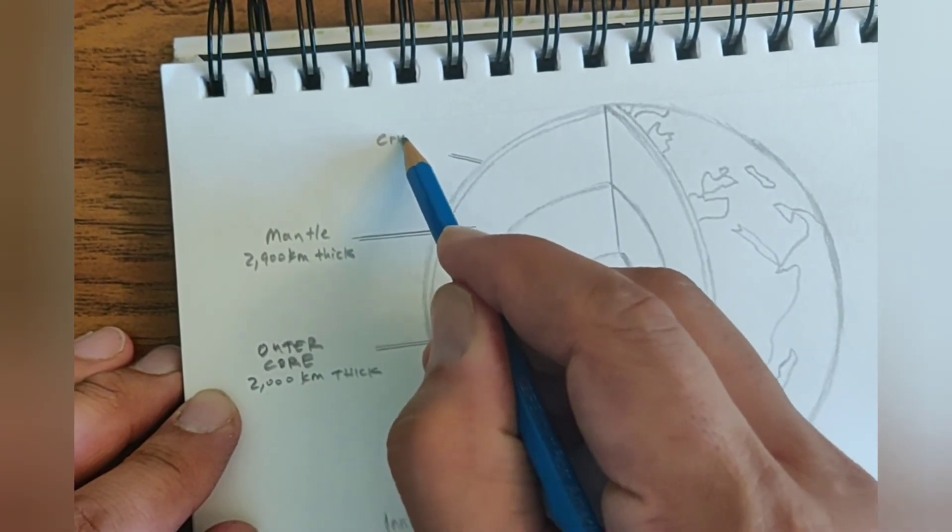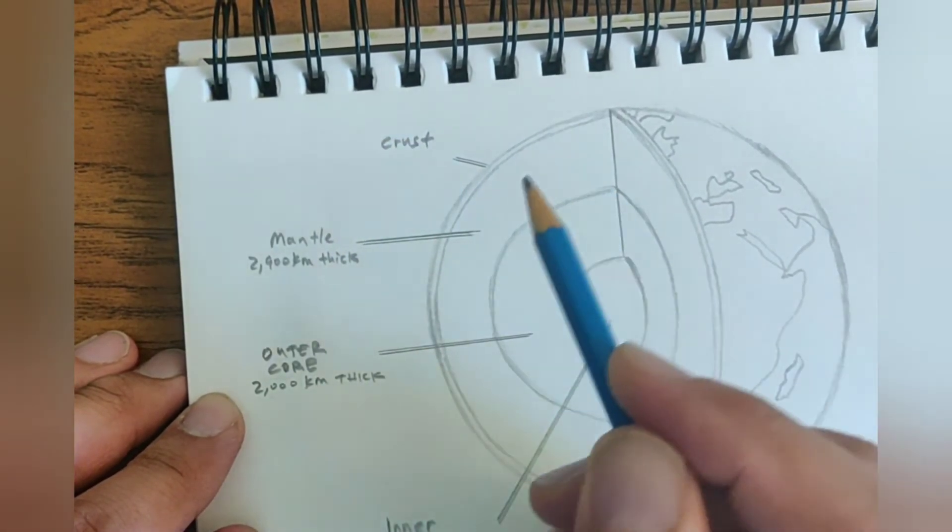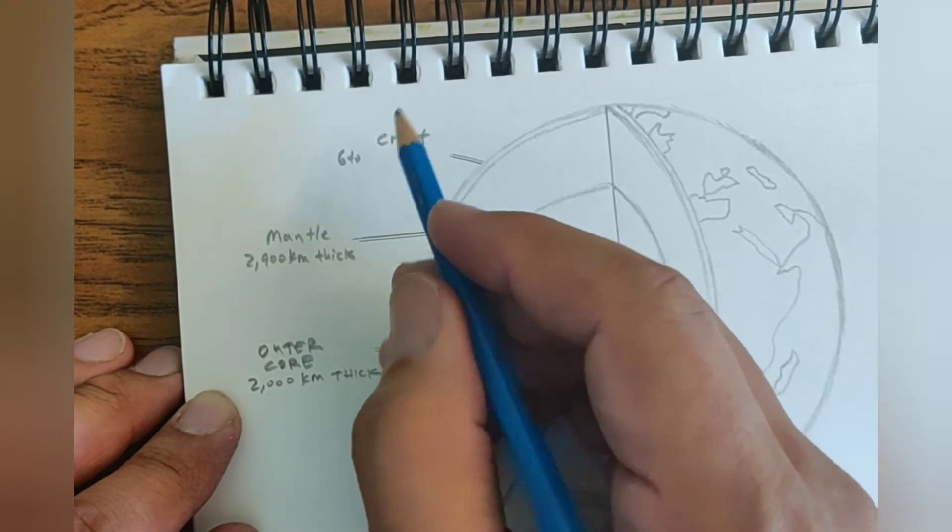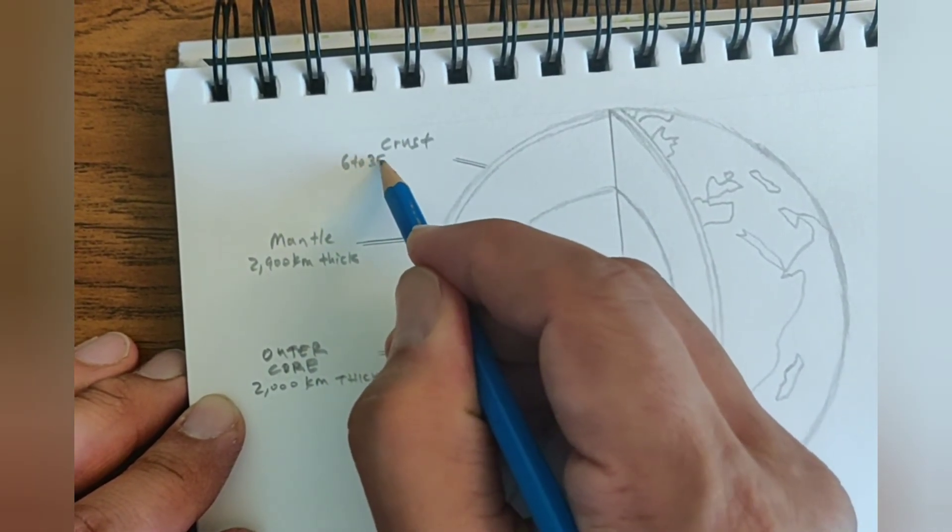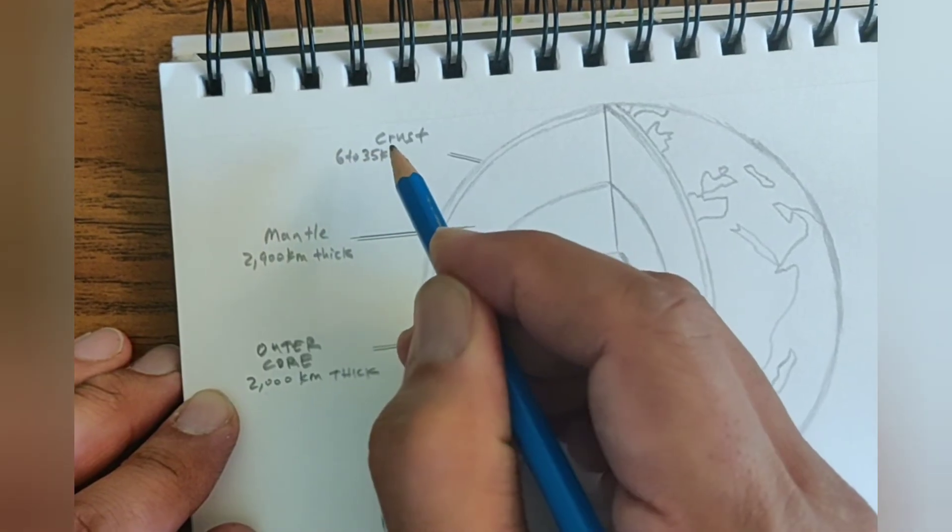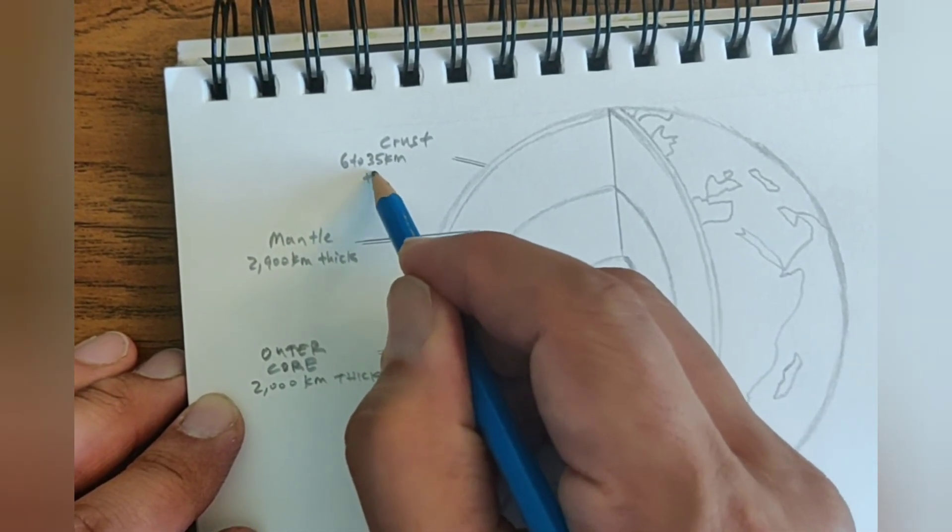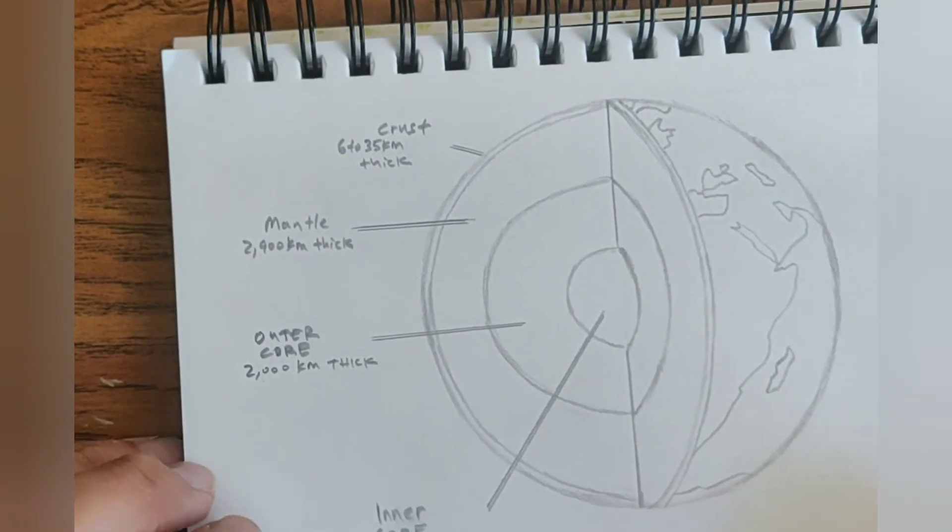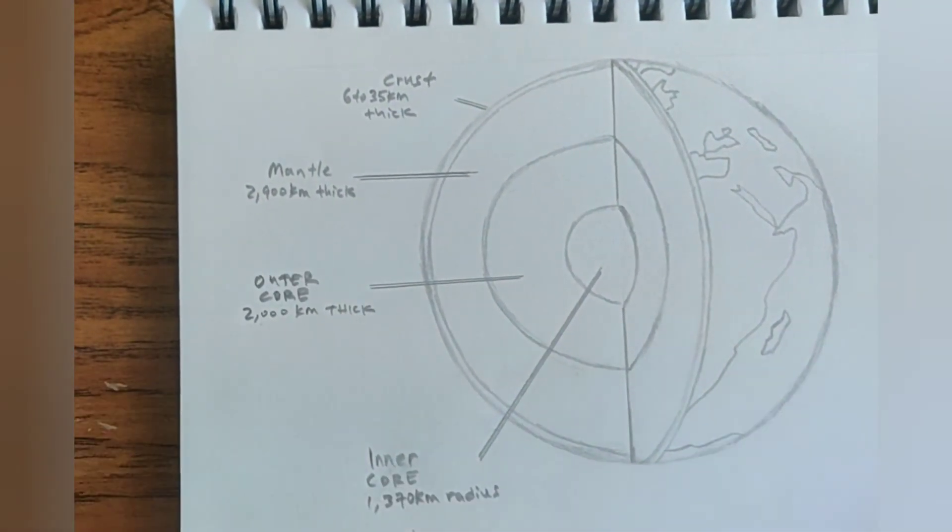And the crust, which is 35 kilometers thick. So this varies in thickness. So there's the sketch.